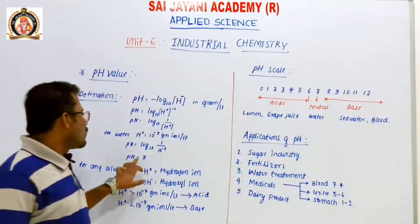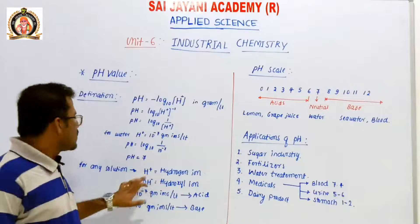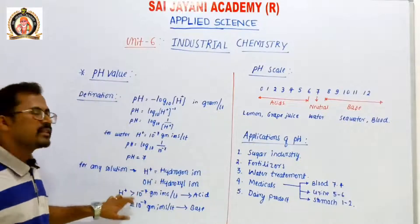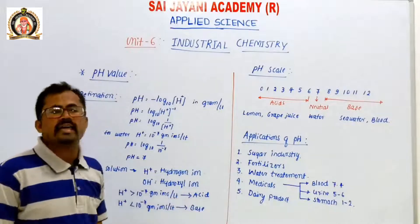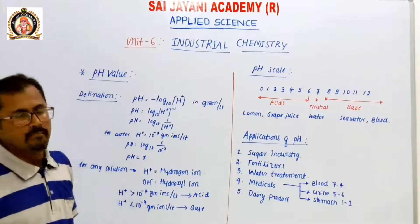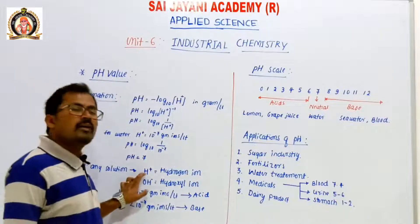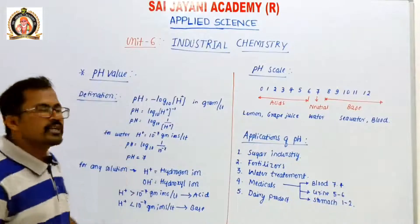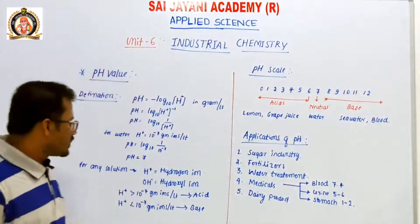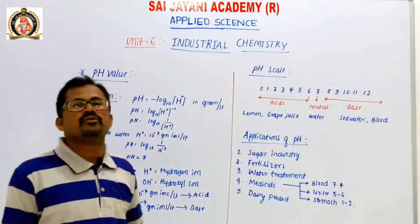A neutral solution — for example, water — has a pH value of 7. For any solution, hydrogen ions are indicated by H⁺ and hydroxyl ions by OH⁻. If hydrogen ions are greater than 10 to the power minus 7 gram ions per liter, the solution is known as an acid. If hydrogen ions are less than 10 to the power minus 7 gram ions per liter, the solution is known as a base. So there are three types of solutions: acids, base, and neutral.